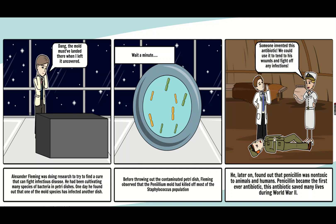Fleming named this chemical penicillin. Later, it was found that penicillin was non-toxic to animals as well as humans, so it could be used for curing bacterial infections in both. Thus, penicillin became the first antibiotic to be discovered. This antibiotic saved many lives during World War II.